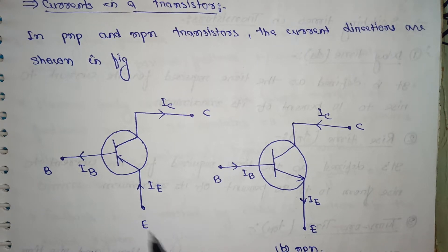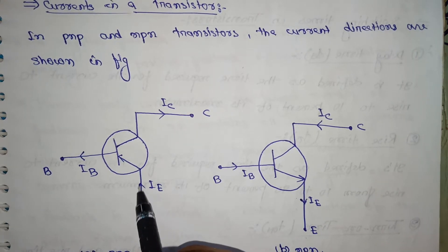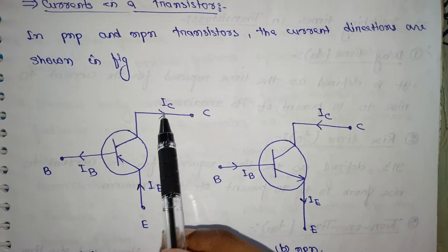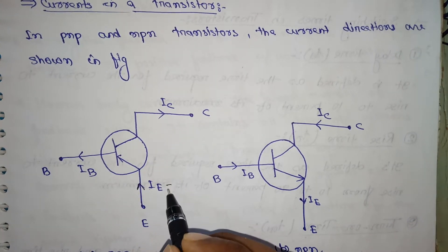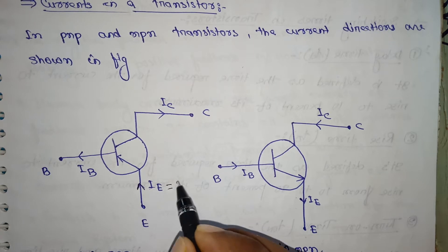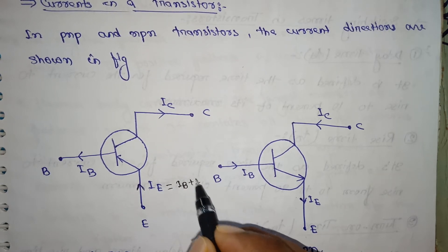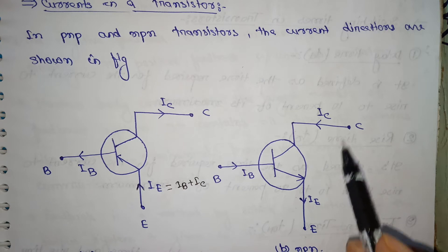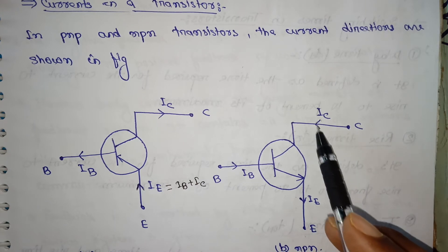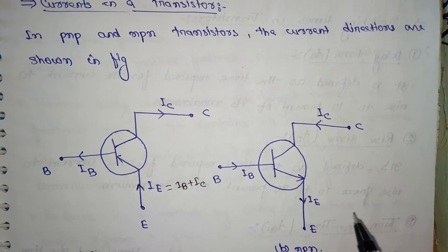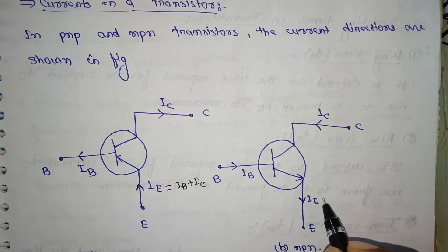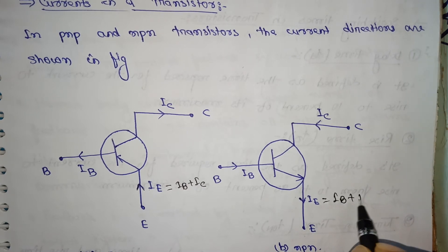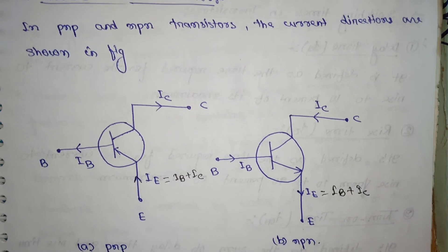In the NPN transistor, the emitter current IE flows in, and the base current IB and collector current IC flow out, so we can write: IE = IB + IC. Similarly, in the PNP transistor, the current flows from IC and IB into IE, so again: IE = IB + IC. Both are similar.